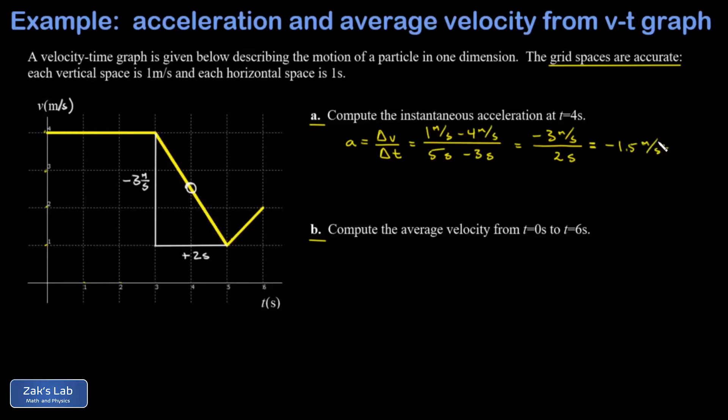In part b I'm asked to compute the average velocity from t equals zero to t equals six. An average velocity is the change in position divided by the change in time, and I have to remember here that change in position is given by the area under the velocity-time graph.